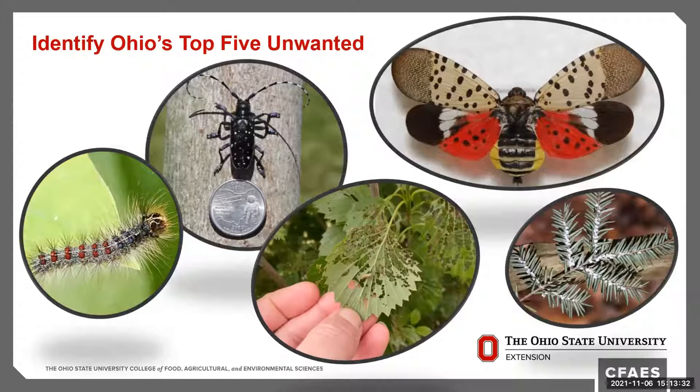So let's get started talking about these unwanted and unloved invasive insect pests. The top five I have chosen include the gypsy moth, the Asian longhorn beetle, the viburnum leaf beetle, the spotted lanternfly, and hemlock woolly adelgid. Let's dig a little deeper.